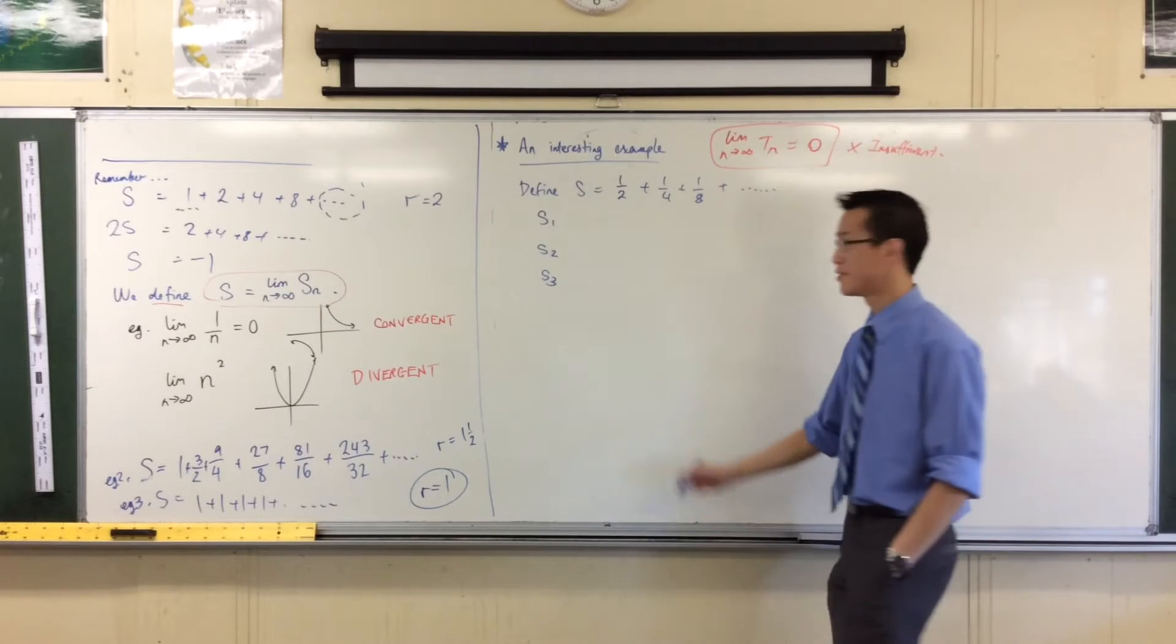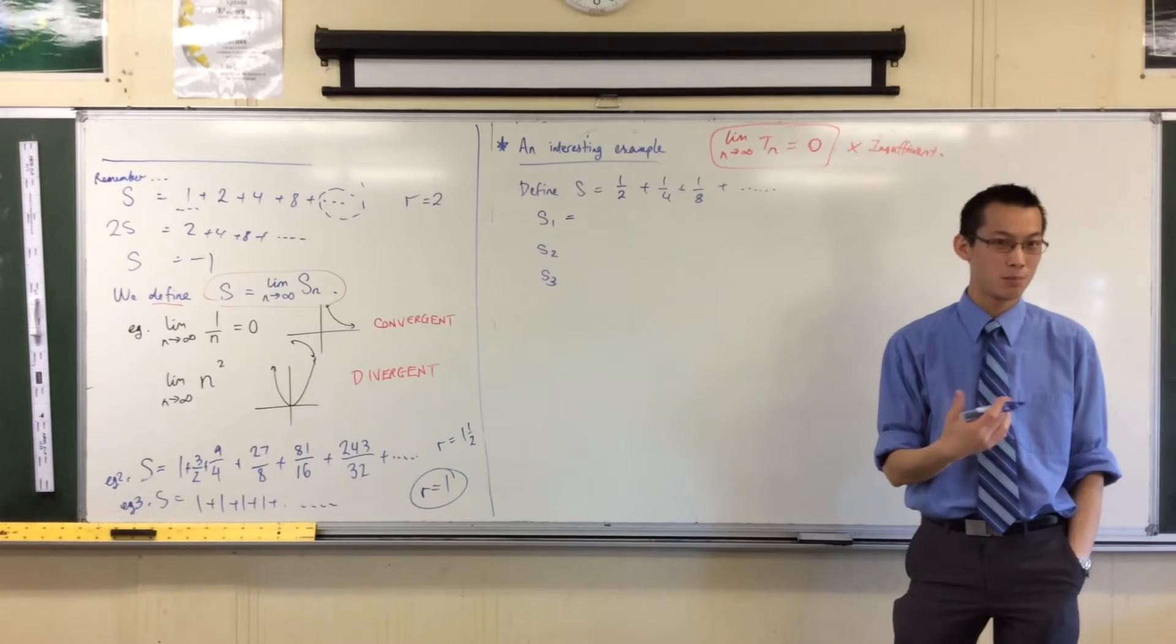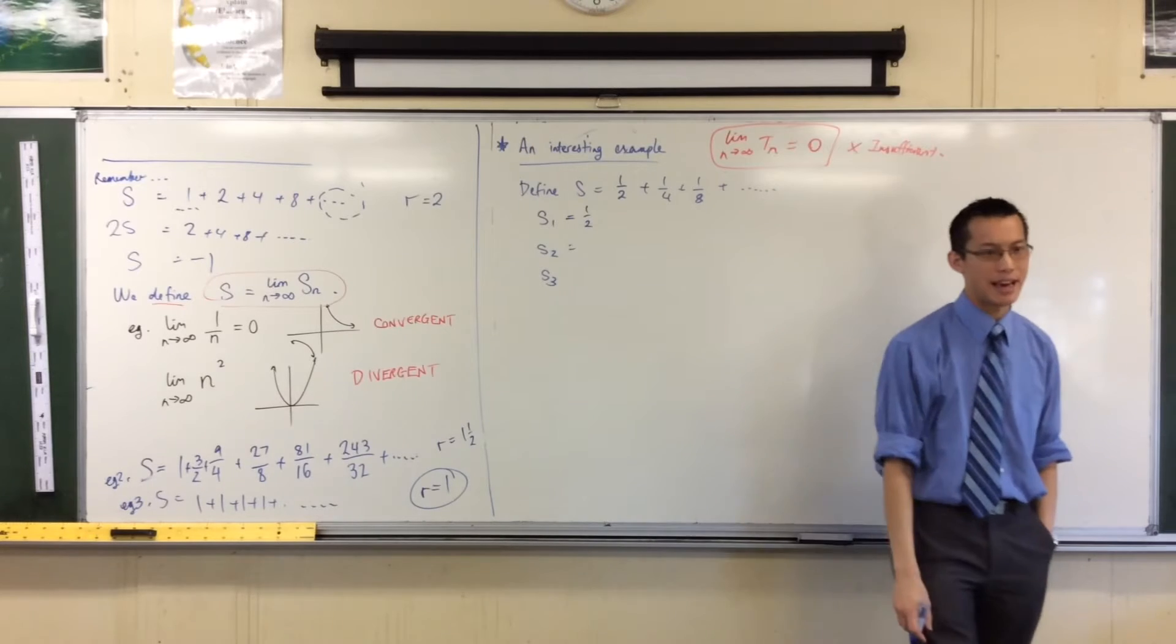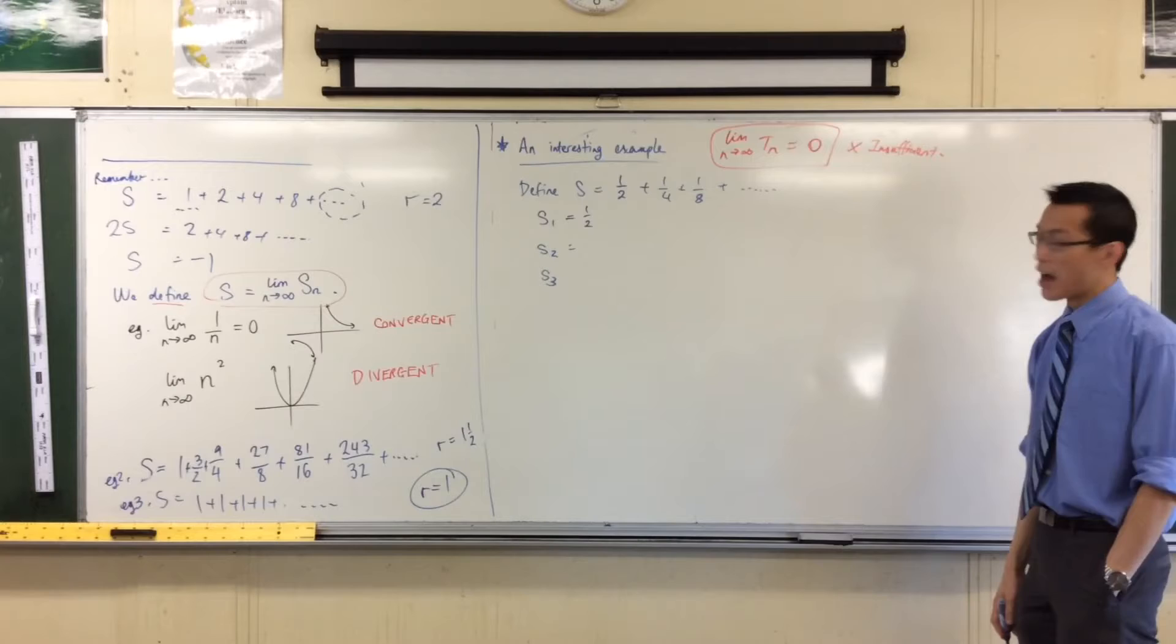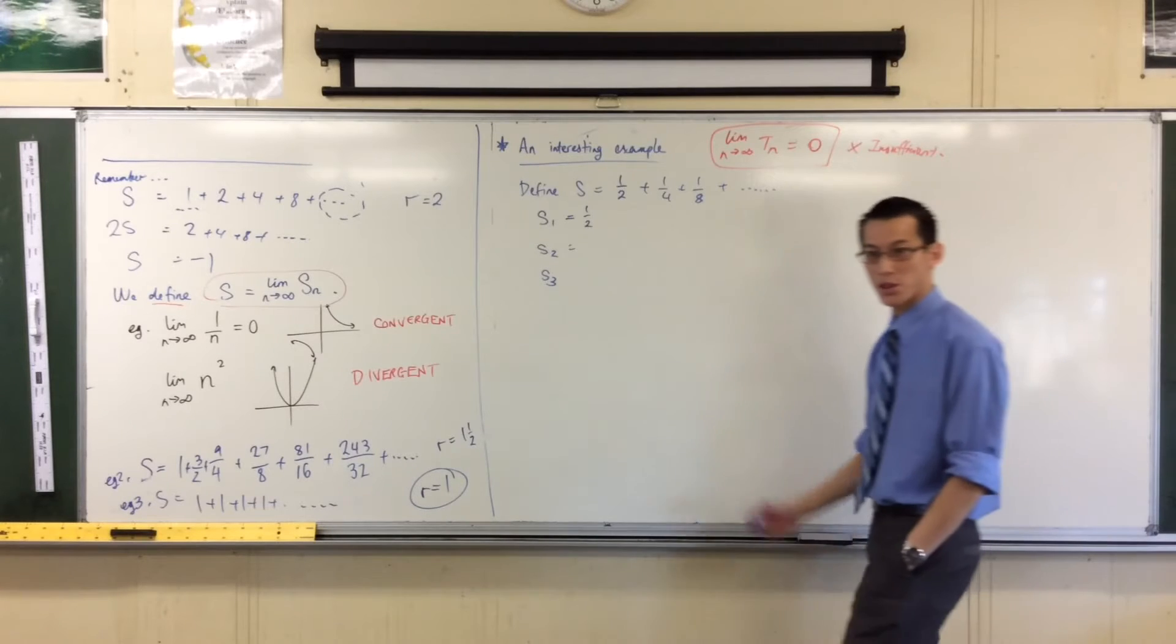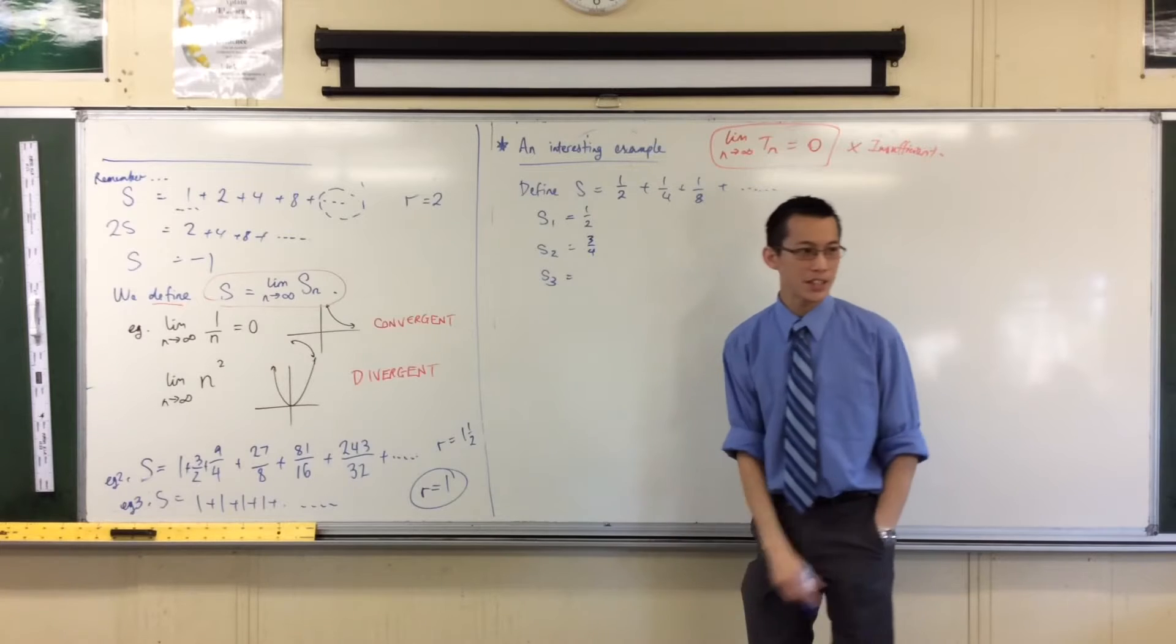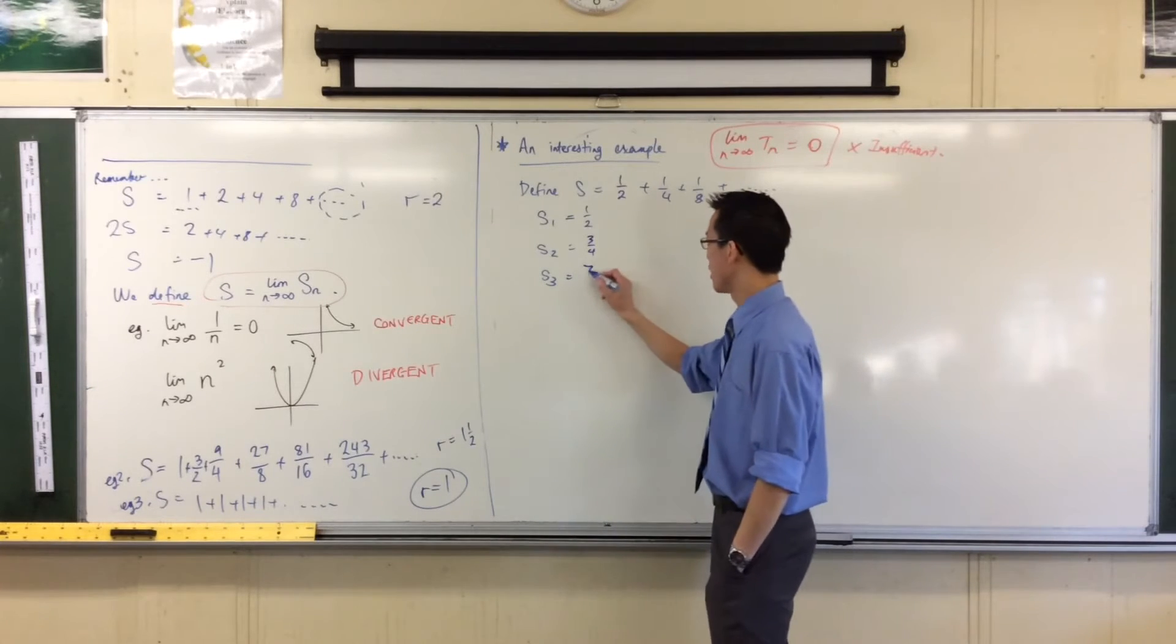So, first term, back to your aggressive definition, right? S_1 is just equal to term 1, which is a half. When you add a quarter to that, that's your second term coming along for the ride, a half is two quarters, so you add one quarter on, so you're going to get three quarters. Then you're going to get, when you add an eighth onto that, seven eighths, okay, good.